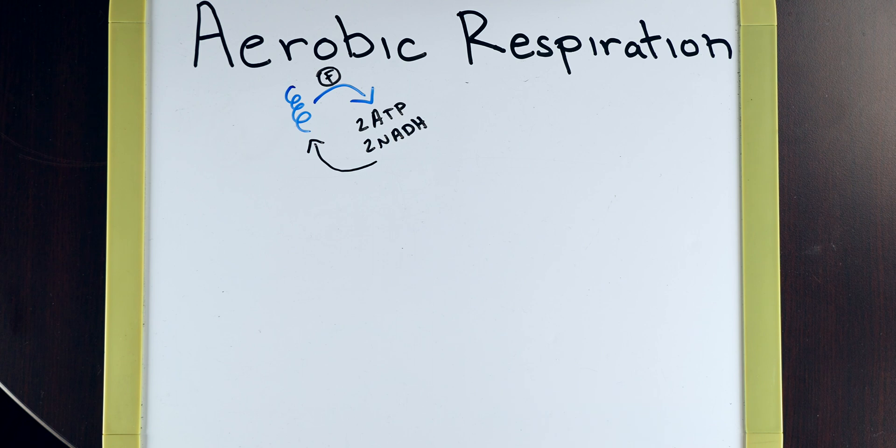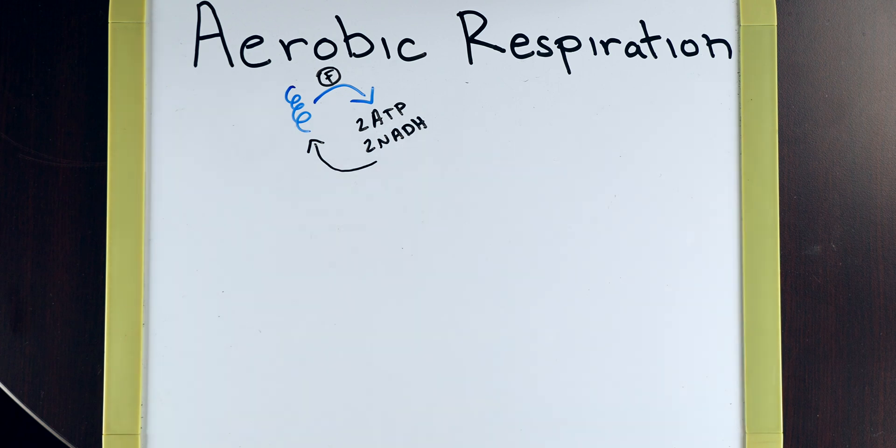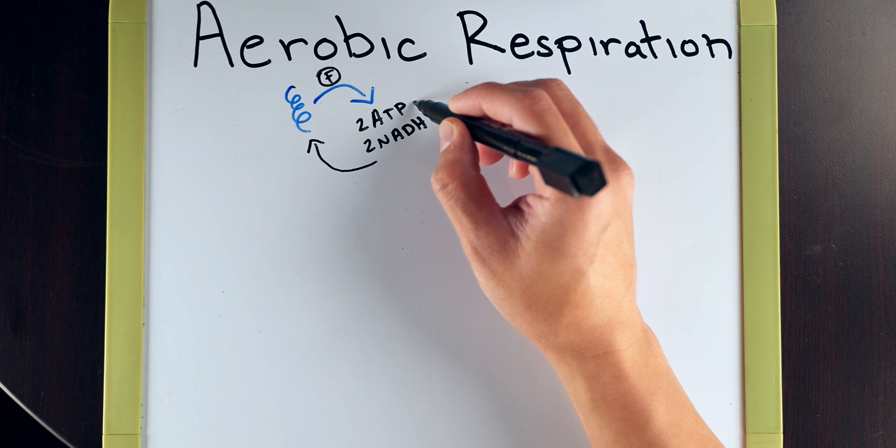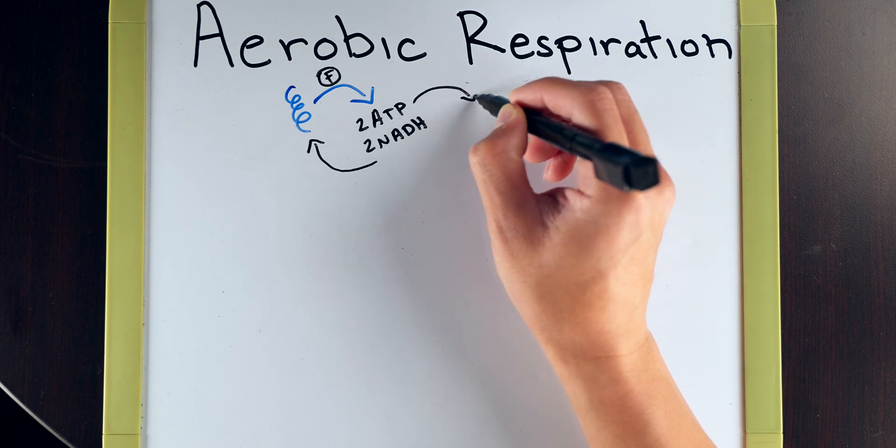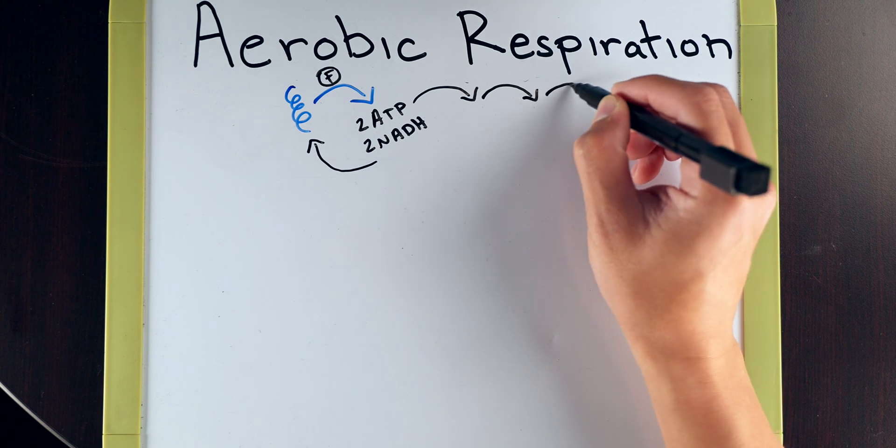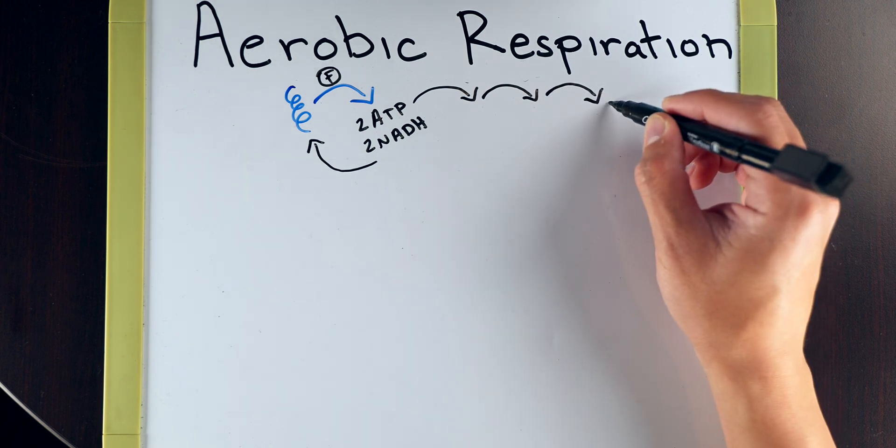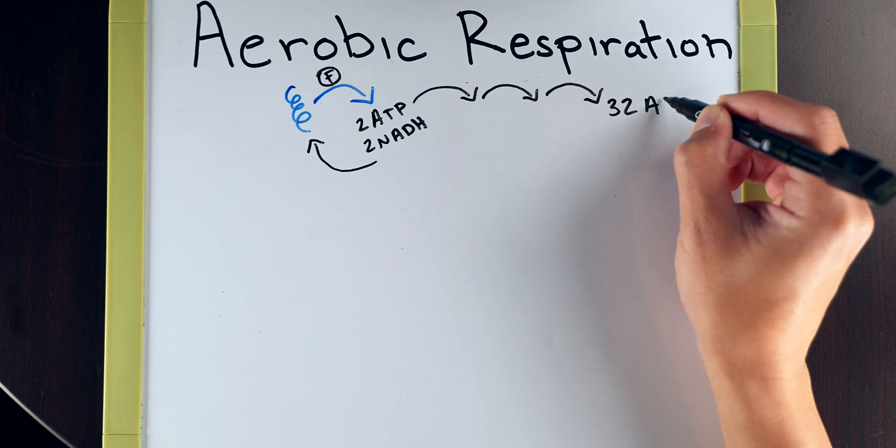Now, whether the bacteria is an anaerobe or aerobe, it will always start off with this process. But if it is able to use air and has the presence of air, it will go down a cascade of events that will allow it to generate more ATP, specifically 32 ATP.